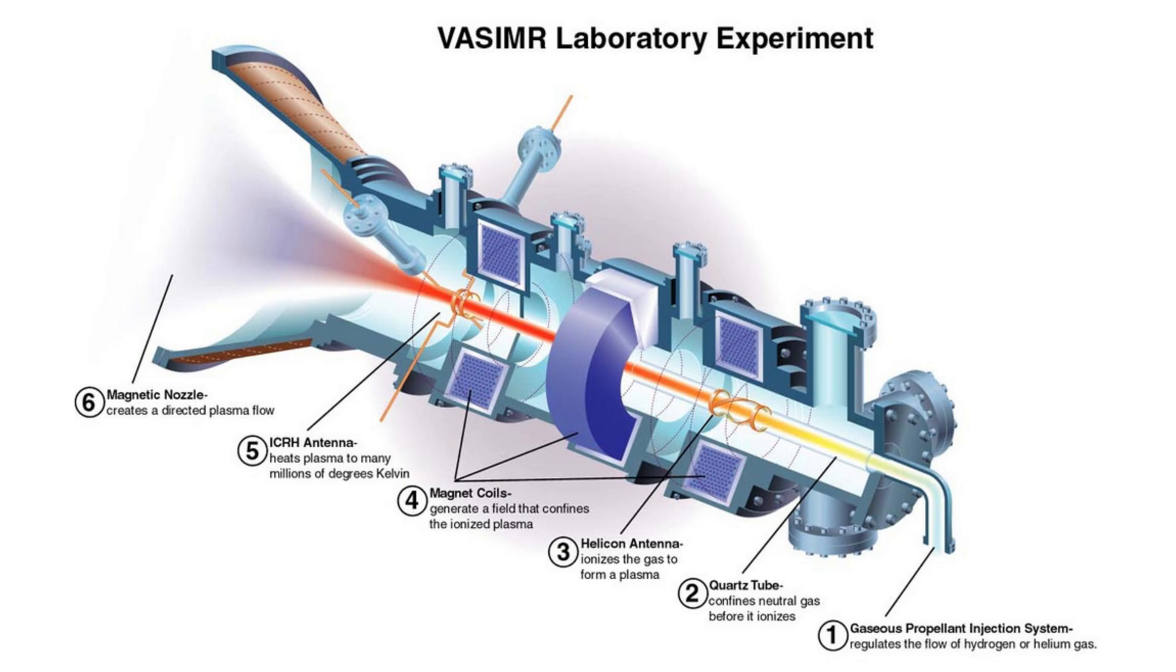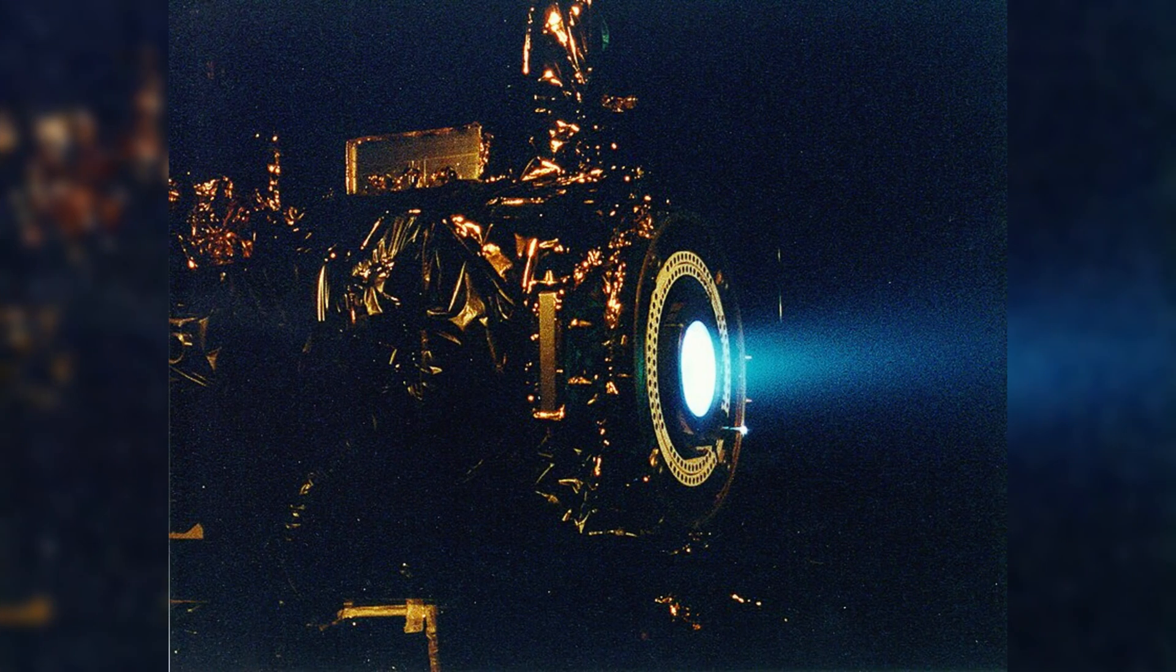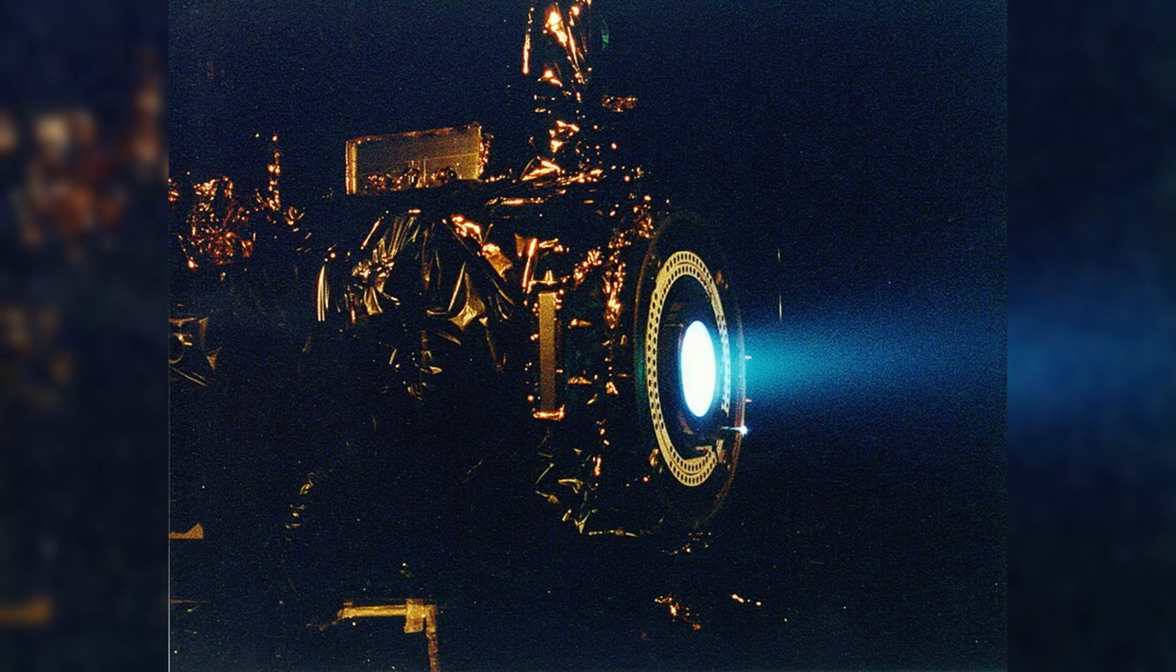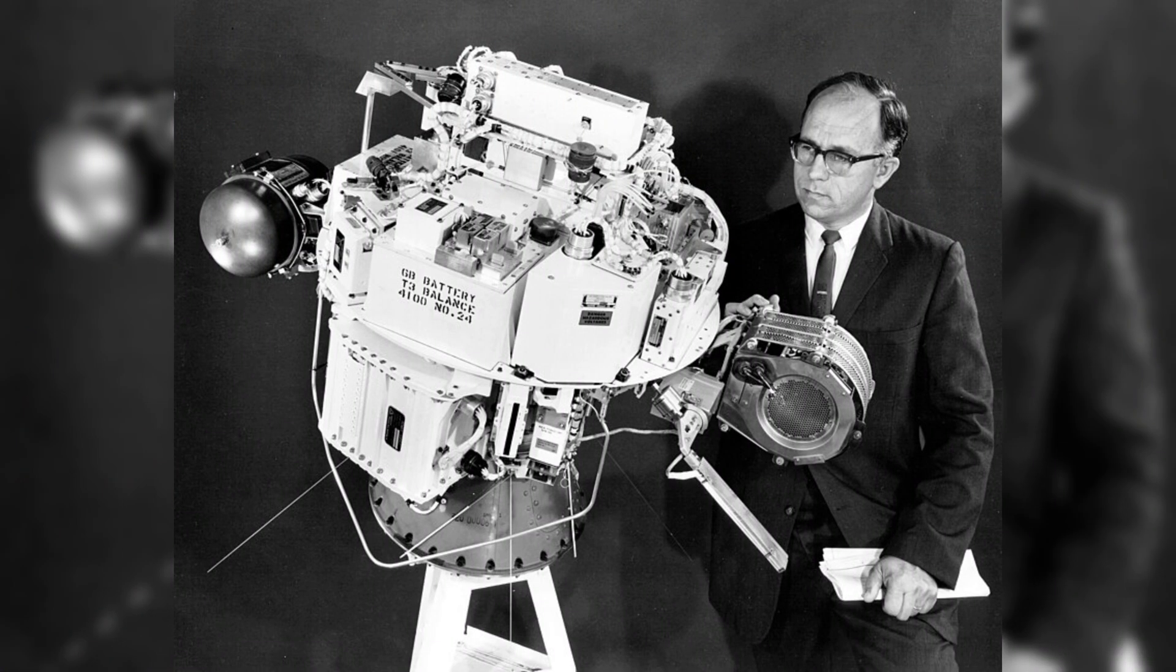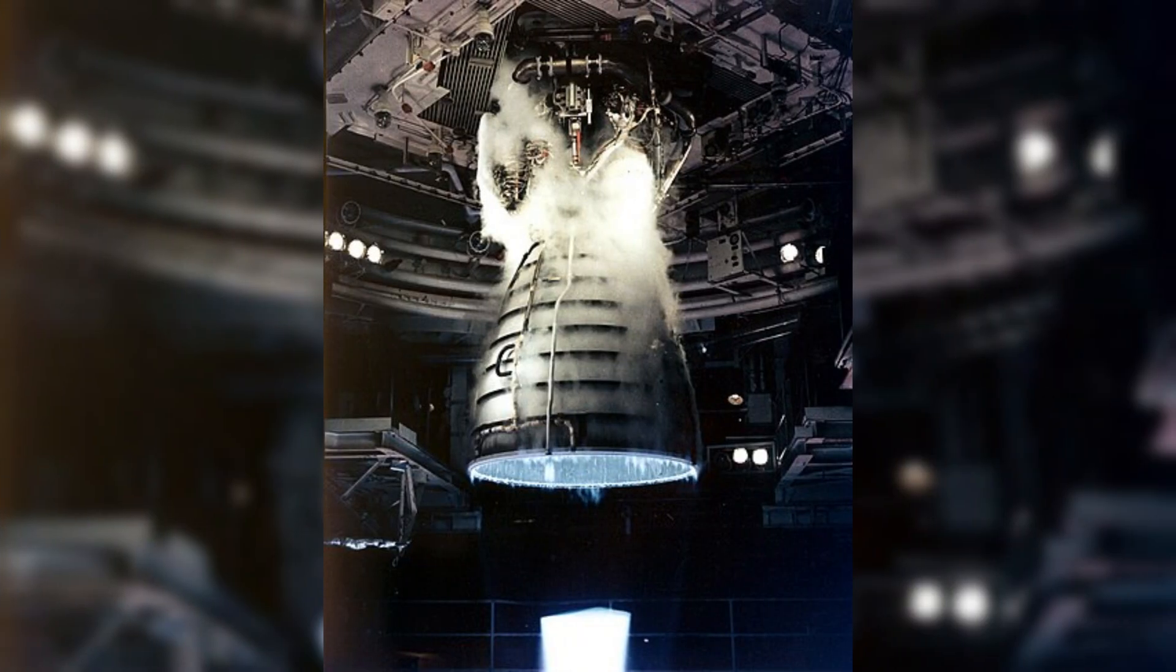Ion thrusters in operation typically consume 1 to 7 kW of power, have exhaust velocities around 20 to 50 km per second, and possess thrusts of 25 to 250 mN and a propulsive efficiency of 65 to 80 percent, though experimental versions have achieved 100 kW.